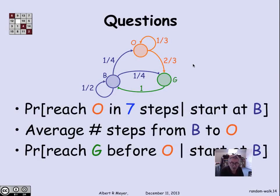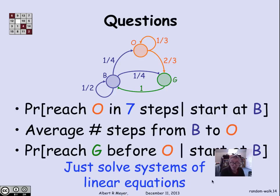So looking back at our questions for random walks, where we ask the probability of reaching O in seven steps starting at B, what's the average number of steps to go from B to O, what's the probability of reaching G before O starting at B. In every case, these questions can be formulated simply as solving systems of linear equations whose structure directly reflects the structure of the digraph.